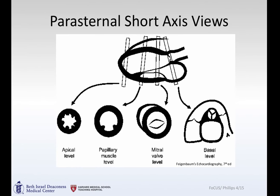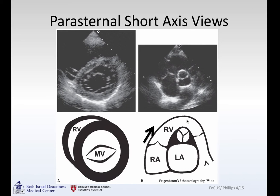When you're in the parasternal short axis, you can tip the probe to get apical views, views along the papillary muscle, mitral valve views, and then the coup de grâce basal-level view where you can see the tricuspid valve, pulmonic valve, and aortic valve, along with the right atrium, pulmonary arteries, and right ventricular outflow tract. Here are some examples of each.